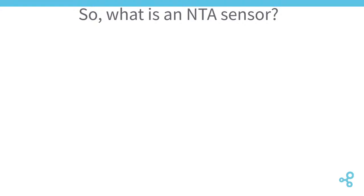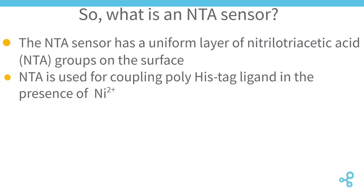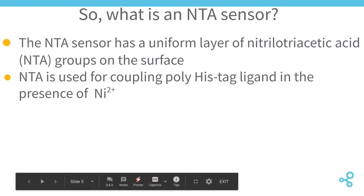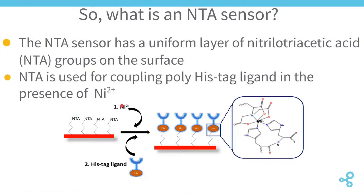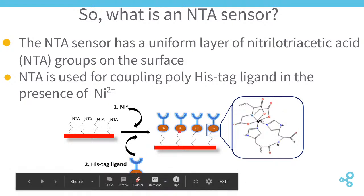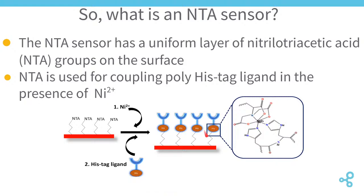What are NTA sensors? NTA sensors have nitrilo-triacetic acid functionalized on the sensor surface. These functionalities are used to couple to a polyhistidine tag from an incoming ligand, and the condition is that there must be nickel present. The NTA layer on the sensor surface is activated by nickel, the ligand is then immobilized, and it's stabilized by an octahedral coordination complex where the polyhistidine tag is bidentate, occupying two sites on the nickel while four sites are occupied by the nitrilo-acetic acid moieties.